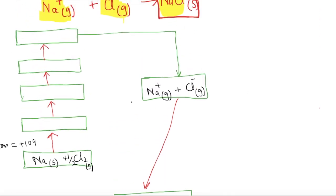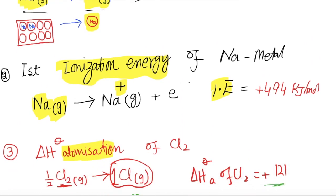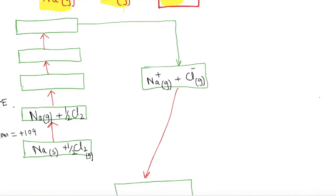In the second step, we remove an electron from the gaseous sodium atom to form the sodium ion. We provide the ionization energy — +494 kJ/mol — and the sodium atom converts to Na⁺ in the gaseous form. Meanwhile, we also have half a mole of Cl₂.